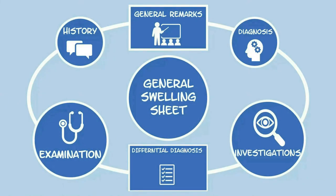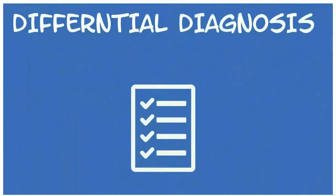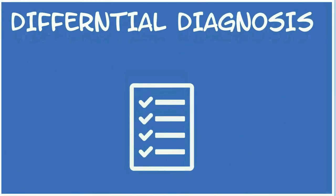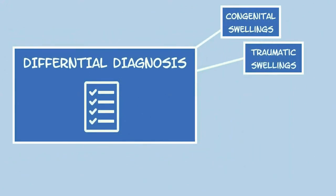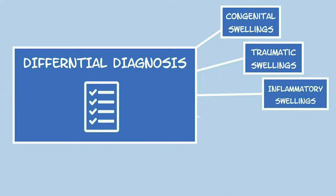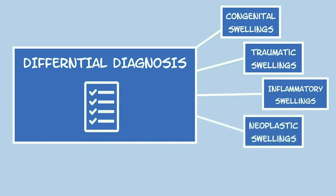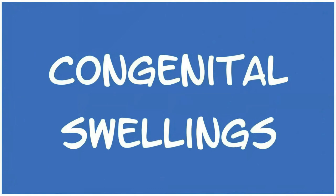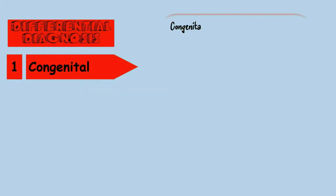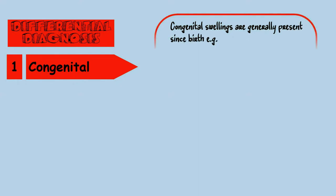Etiology or classification of swellings can be discussed under the famous five groups: mainly congenital, traumatic, inflammatory, neoplastic, and others.